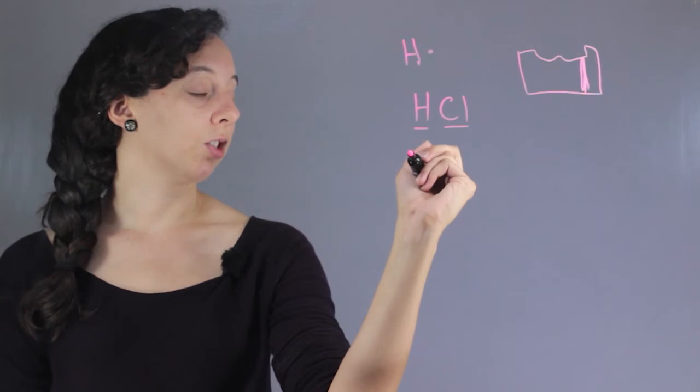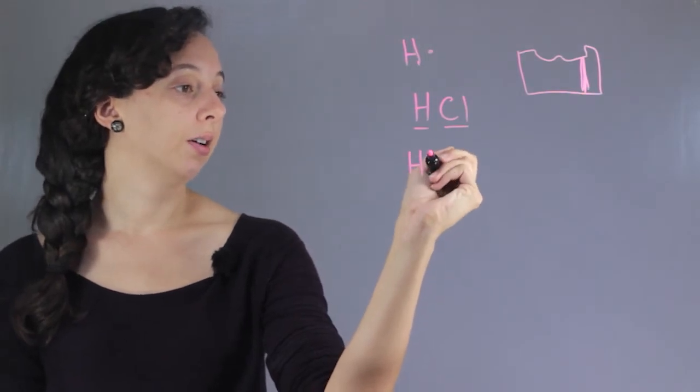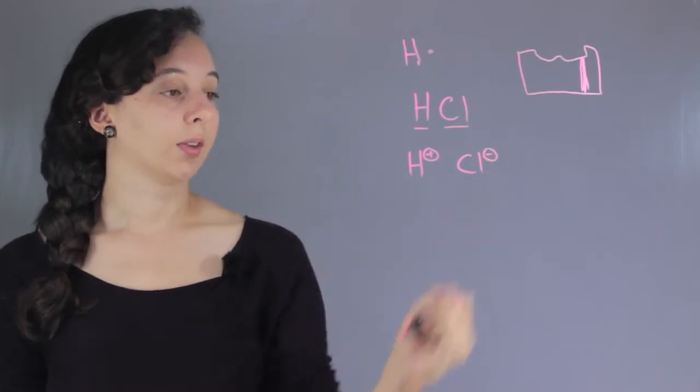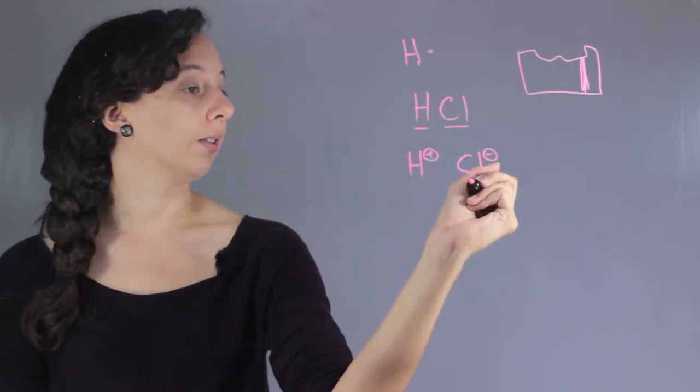What happens in actuality is that this is an ionic bond, which means that hydrogen is positively charged and chlorine is negatively charged. So this has no electrons and chlorine has eight.